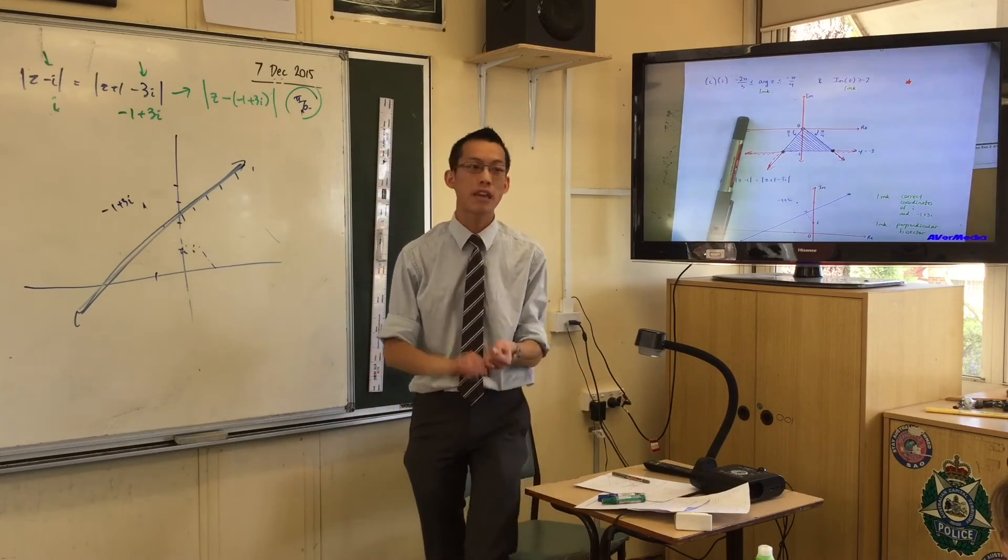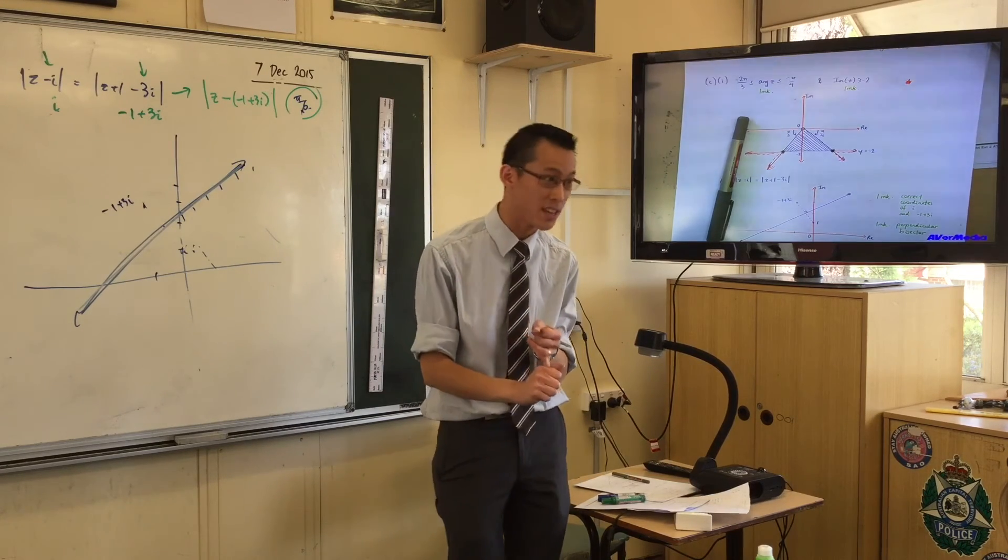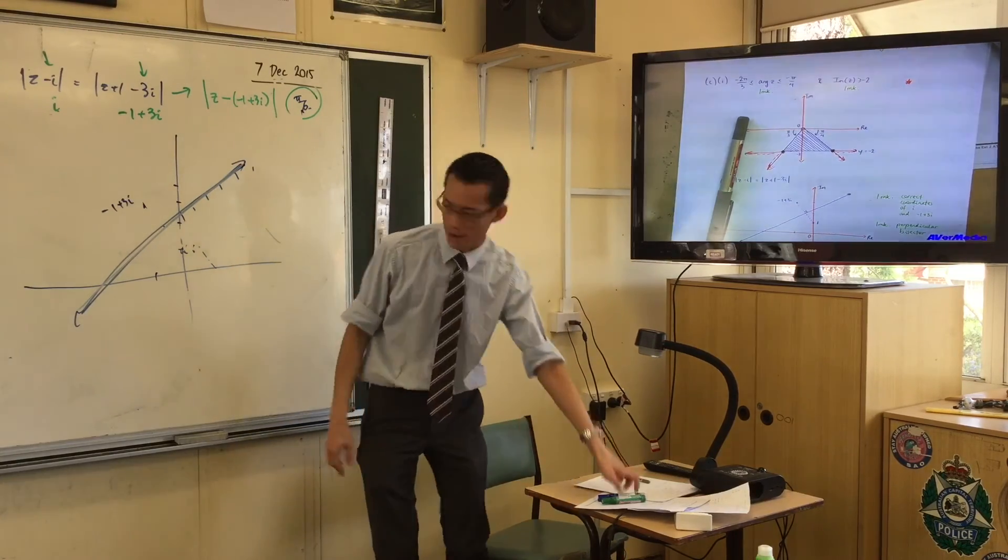You cannot use whiteout to fix your pen graph because you can't use whiteout in the HSC. So don't use it. Use a pencil. Or, here's a simpler way. Here's a simple way.